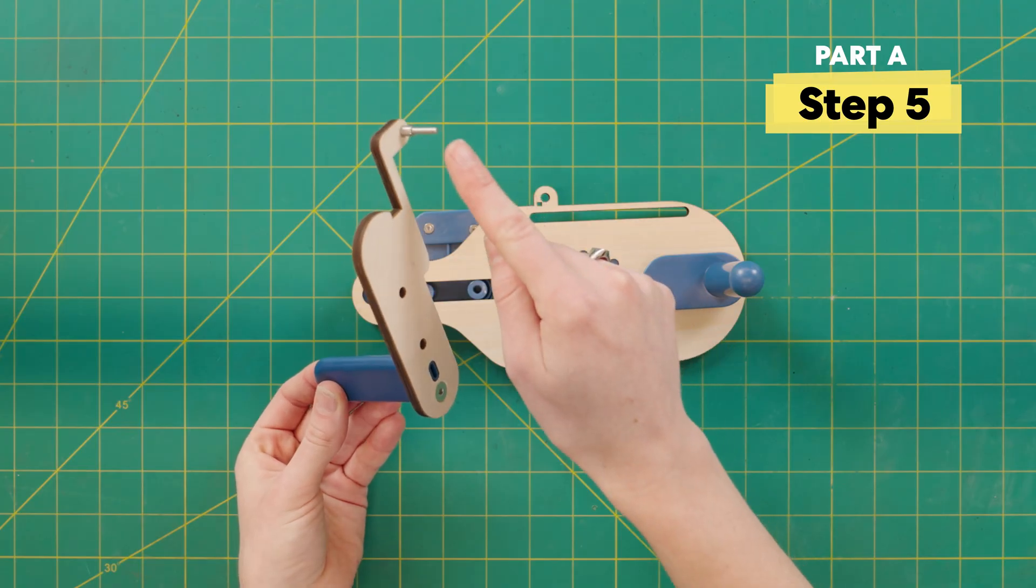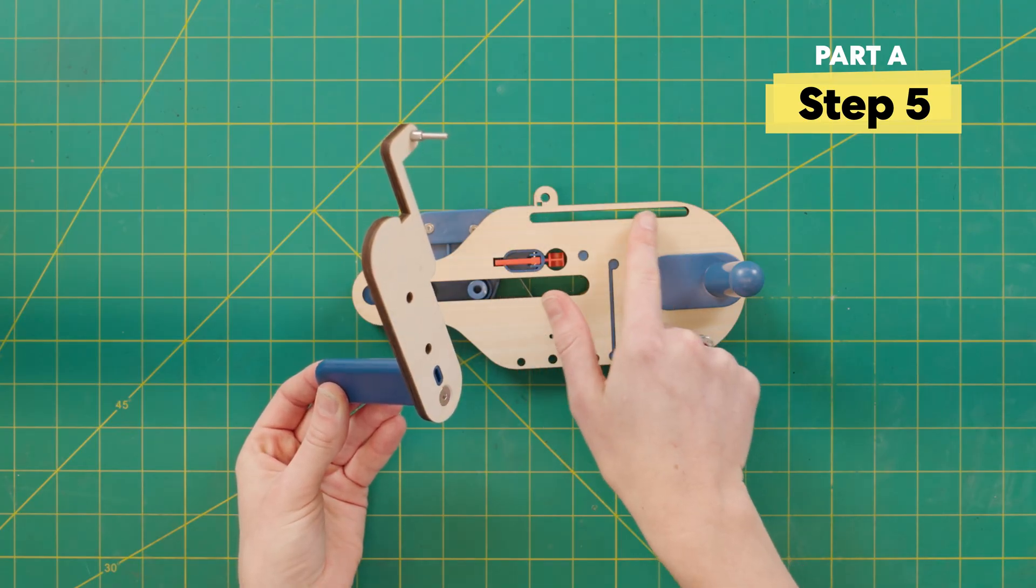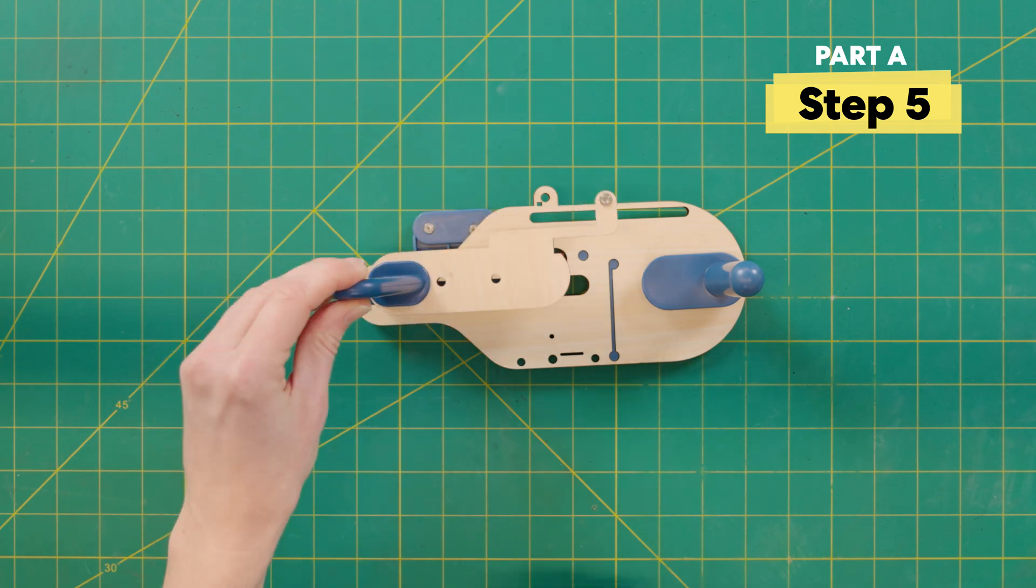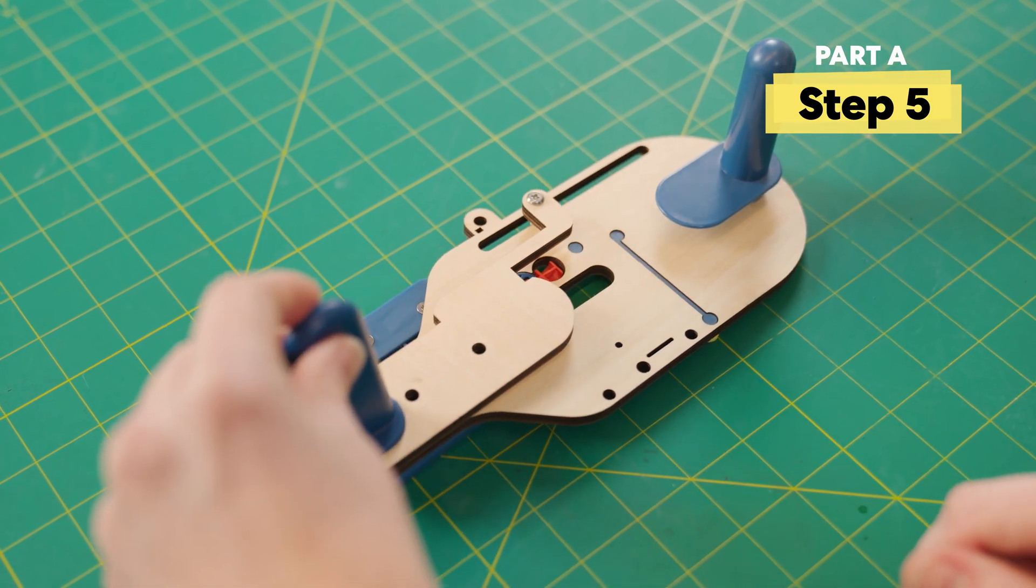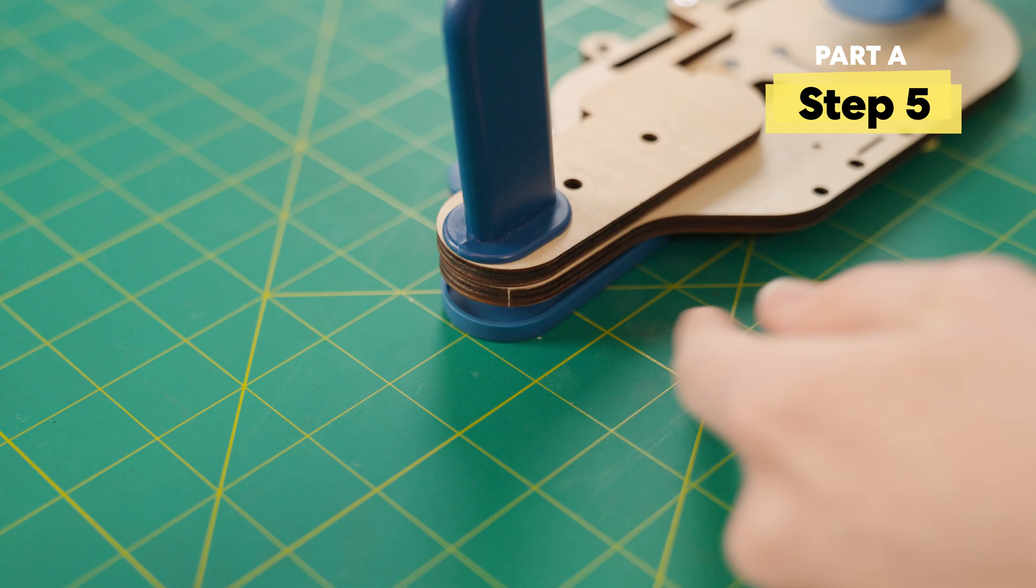You can take the piece with the little bolt sticking up and set it into this groove. Yay! This will also slide back and forth. Also make sure that it's lined up all the way to the back.